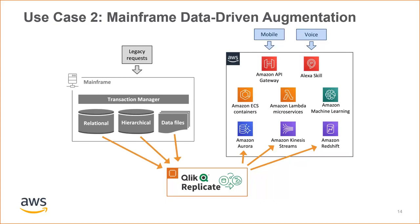We use AWS local data stores to avoid latency issues and to avoid increasing the mainframe's expensive MIPS consumption. Once the mainframe data is in a local AWS data store, we can create services quickly on top of it. A new mobile application or voice interface can be added using Amazon API Gateway, Amazon Lex, or Amazon Alexa Skills. Business logic can reside in microservices hosted in AWS Lambda or in containers within Amazon ECS. Some innovative services can also benefit from Amazon machine learning services. Because data is duplicated between the mainframe and AWS data stores, the data architect needs to be careful about data consistency and integrity — solutions include using read-only and read-write patterns, or consistency checks and remediations.